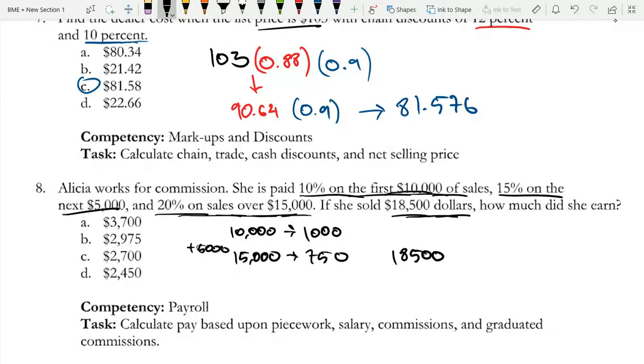And lastly, 20% on sales over $15,000. So she had another $3,500, and that brings us to a total of $18,500. And she earns 20% on this $3,500, which is equal to $3,500 times 0.2 is $700.